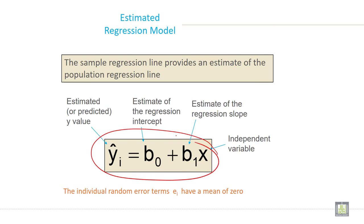Where y-hat is the estimated y value or change in y value. b0 is the regression intercept or constant. b1 is the estimate of the regression slope, and x is the independent variable.